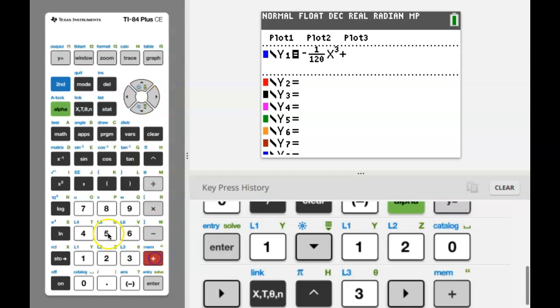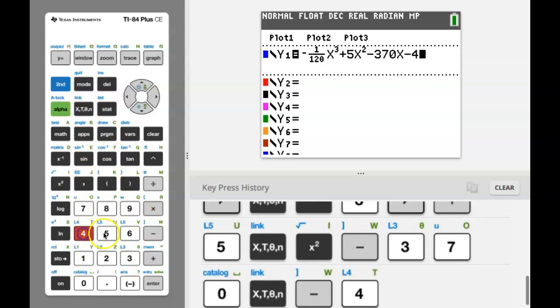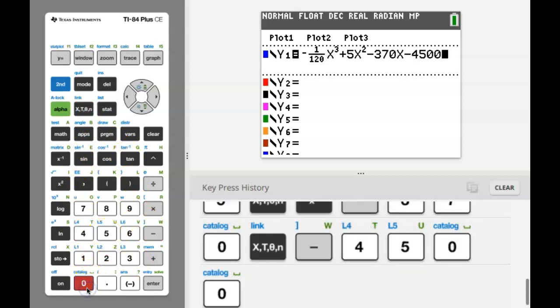Next we have plus 5x squared. Now to square a quantity you can use the caret like I just showed you or you actually have a button just for squaring right here. You could use the x squared button. Either way they both work. Minus 370x minus 4,500. And now we have the entire function entered into our y equals.